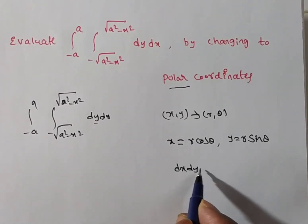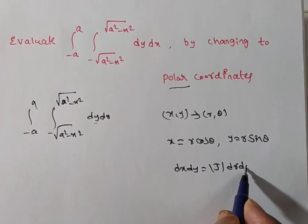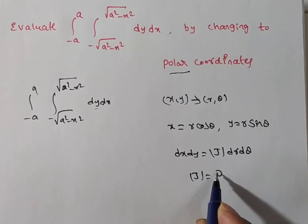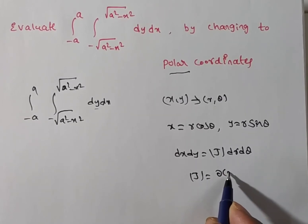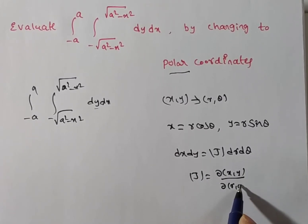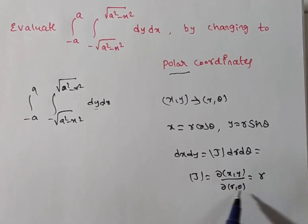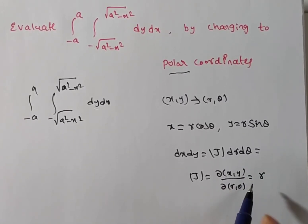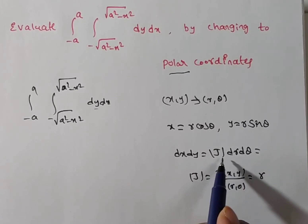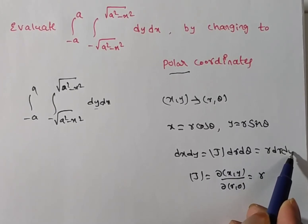Here, dx dy is nothing but the Jacobian times dr d theta. The Jacobian is the transformation between the x, y variables and the r, theta variables. After simplifying, you get r. So the Jacobian gives r dr d theta.